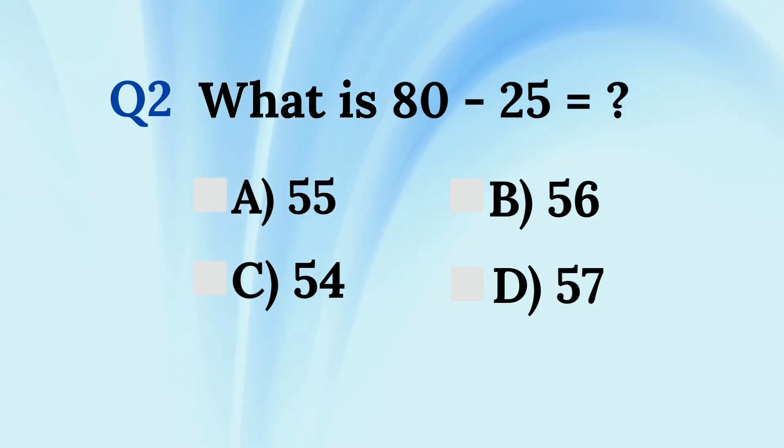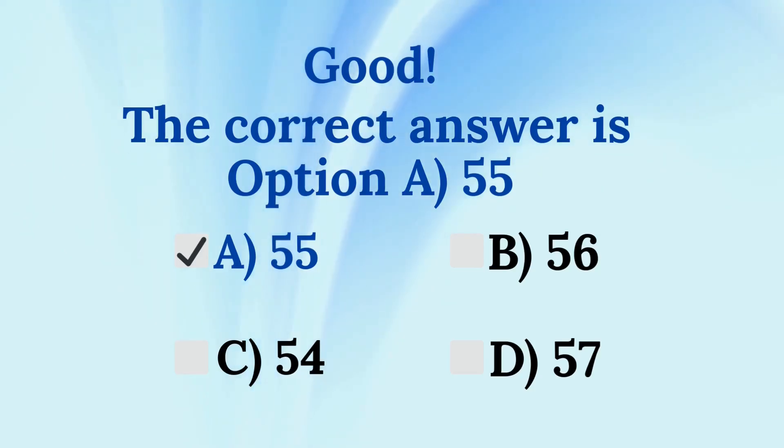Question 2. What is 80 minus 25 equals? Is it option A, 55, option B, 56, option C, 54, or option D, 57? Think carefully and choose the correct answer A, B, C, or D. Good. The correct answer is option A, 55.